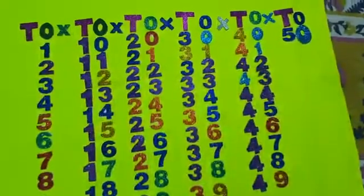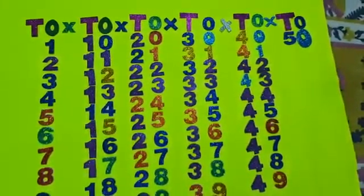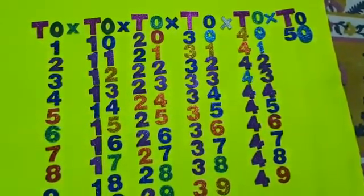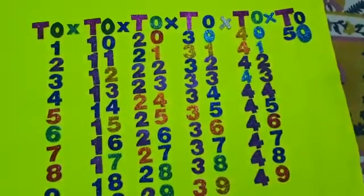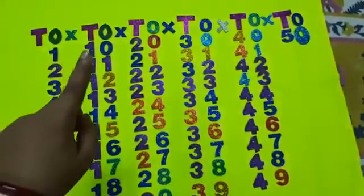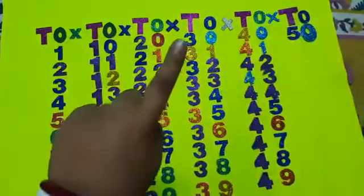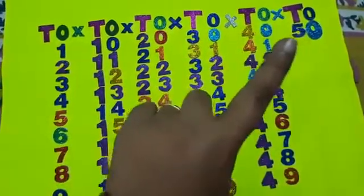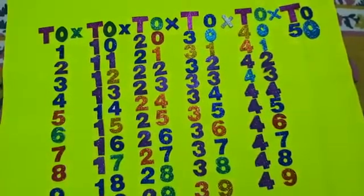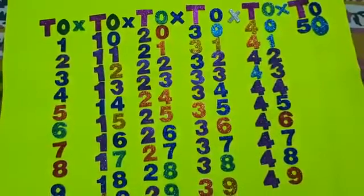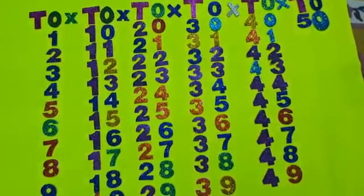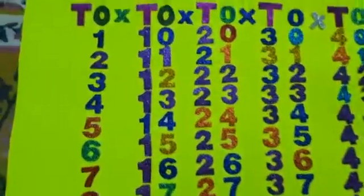Now children, come let us see how we need to write in sequence from 1 to 50. Here you can see I have written T-O, X, T-O, X, T-O, X, T-O, X, T-O. We will start writing from the first T-O.